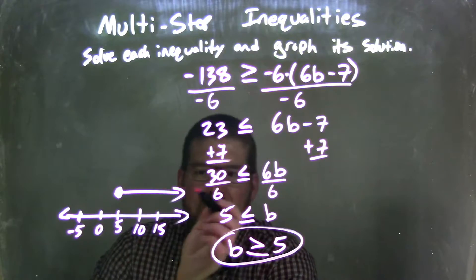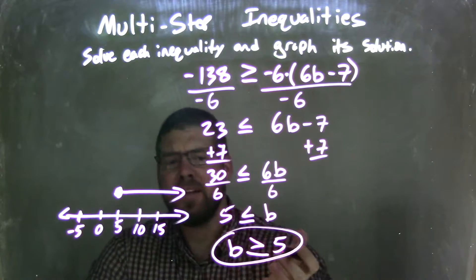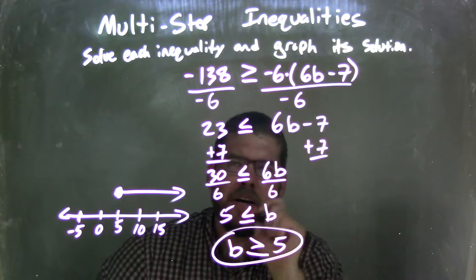where this graph shows that b is greater than or equal to 5. Equal to 5, closed circle, greater than with the arrow going to the right. And that's it. That's our final answer. b is greater than or equal to 5. So let's recap.